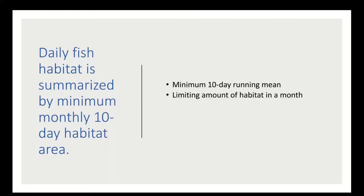Daily fish habitat is summarized by the minimum monthly 10-day habitat area. We use 10-day running means — the five days before the current day, the current day, and the four days afterwards — to get a single value for each month. This represents the limiting amount of habitat in a month, so we don't over-represent months with just one or two days of really high habitat area values. We needed a monthly habitat value to enable comparison with vegetation.